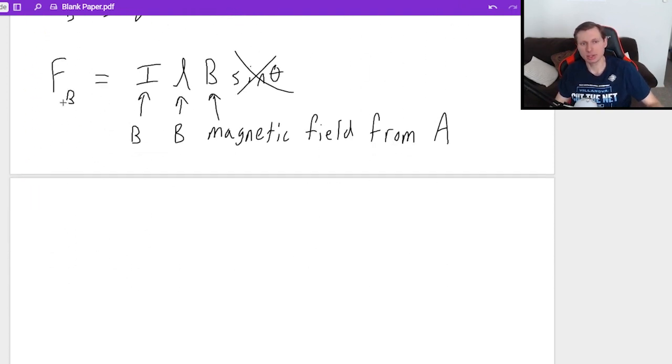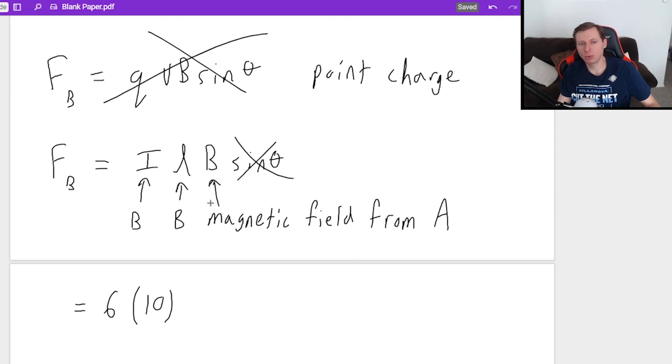But anyways, it looks like the force on wire B is equal to I, the current, L, the length of B, times the magnetic field from A. We know the current already, it's 6, the length of the wire is 10, and the magnetic field B, we're going to have to solve for it.